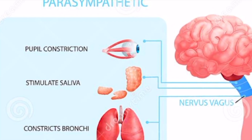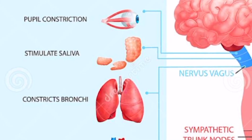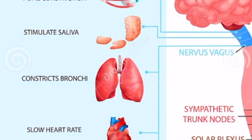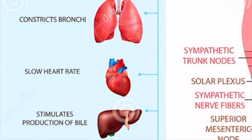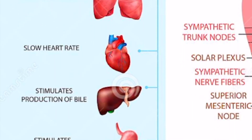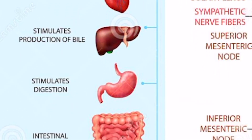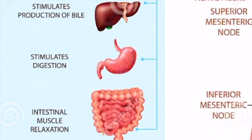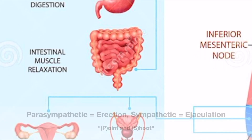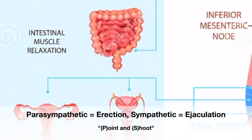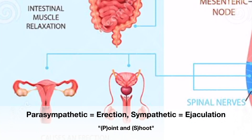In contrast, rest and digest describes the parasympathetic system. When we're resting, relaxed, and eating, we're digesting food, producing saliva, heart rate is lower, and pupils are constricted. One thing to remember for the GU system: erection is stimulated by parasympathetics, but ejaculation is stimulated by sympathetics. Point and shoot — parasympathetics for erection, sympathetics for ejaculation.